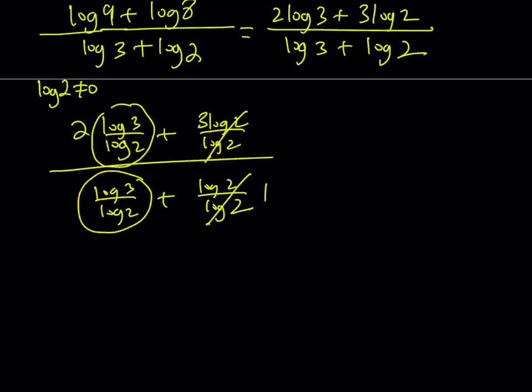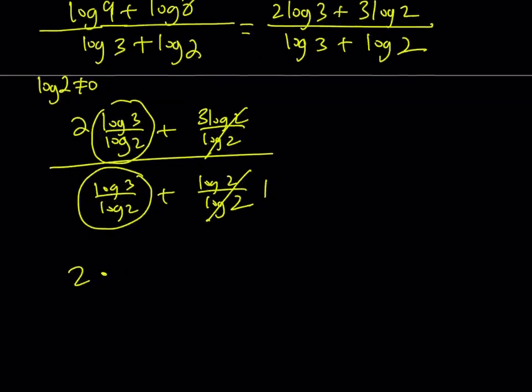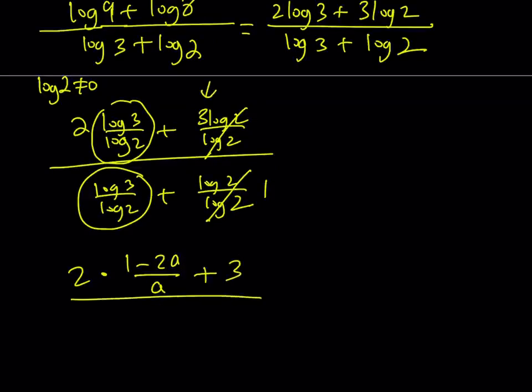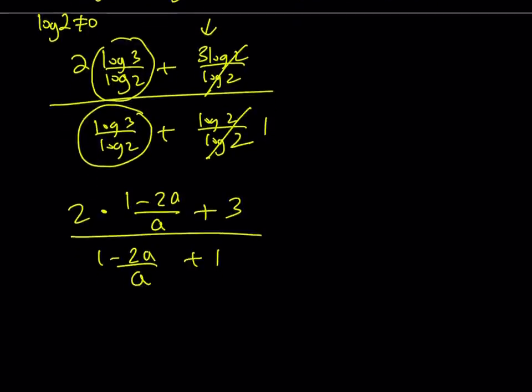So, from here, the original expression that I have can be written as 2 times, now, what is the ratio log 3 over log 2? That is 1 minus 2a over a, right? Plus 3, this 3 right here. And then, that is divided by this expression again, 1 minus 2a over a, plus 1. So, this is what I'm trying to find. Let's go ahead and simplify this.